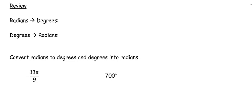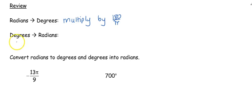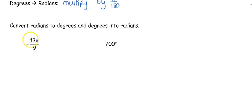Today's video is focused on radians. Yesterday we talked about how to graph in degrees, and now we're going to talk about what a radian is and how to graph in radians. Starting with a reminder from yesterday: how to convert between degrees and radians. If I want to go from radians to degrees, I multiply by 180 over pi. If I want to go from degrees to radians, I multiply by pi over 180. Quick review: we have negative 13 pi over 9.